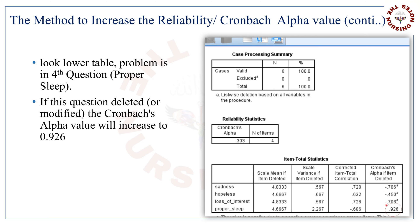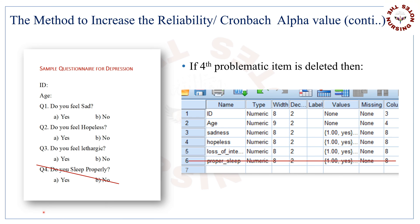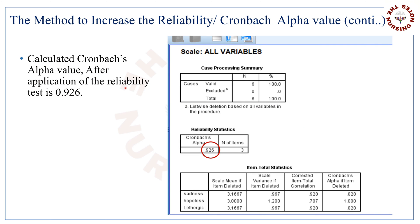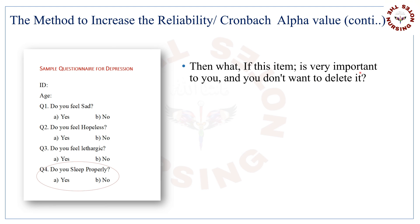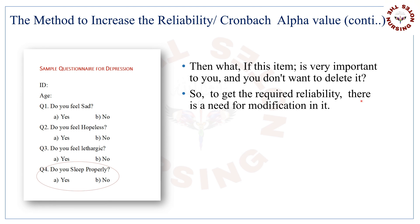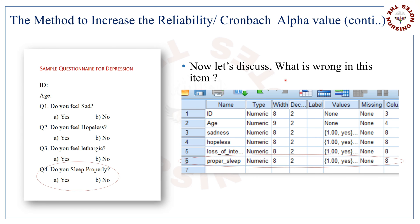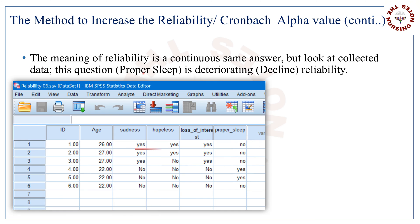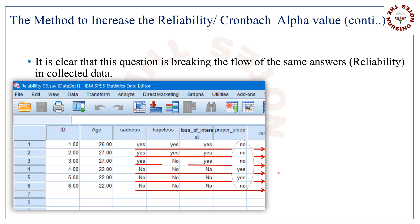Now look at other items — if we delete any other item, Cronbach's alpha value will decrease. If the fourth problematic item is deleted, the calculated Cronbach's alpha value after application of the reliability test is 0.926, which is very high, meaning great reliability. But what if this item is very important to you and you don't want to delete it? To get the required reliability, there is a need for modification. The meaning of reliability is a continuous same answer, but look at the collected data — this question is breaking the flow of the same answers in the collected data.